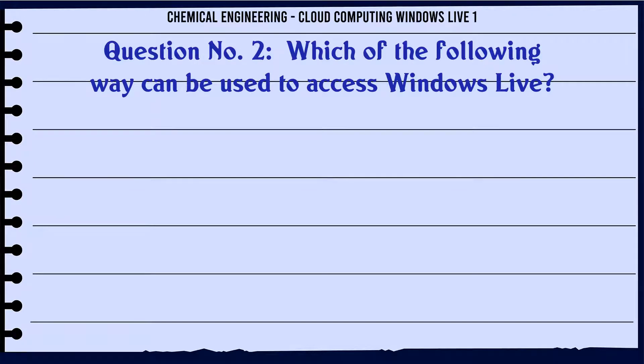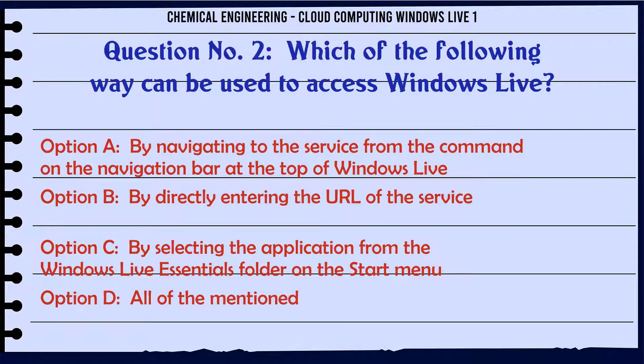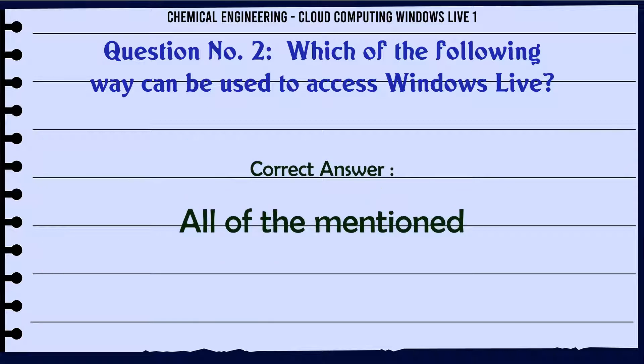Which of the following ways can be used to access Windows Live? A. By navigating to the service from the command on the navigation bar at the top of Windows Live. B. By directly entering the URL of the service. C. By selecting the application from the Windows Live Essentials folder on the start menu. D. All of the mentioned. The correct answer is All of the mentioned.